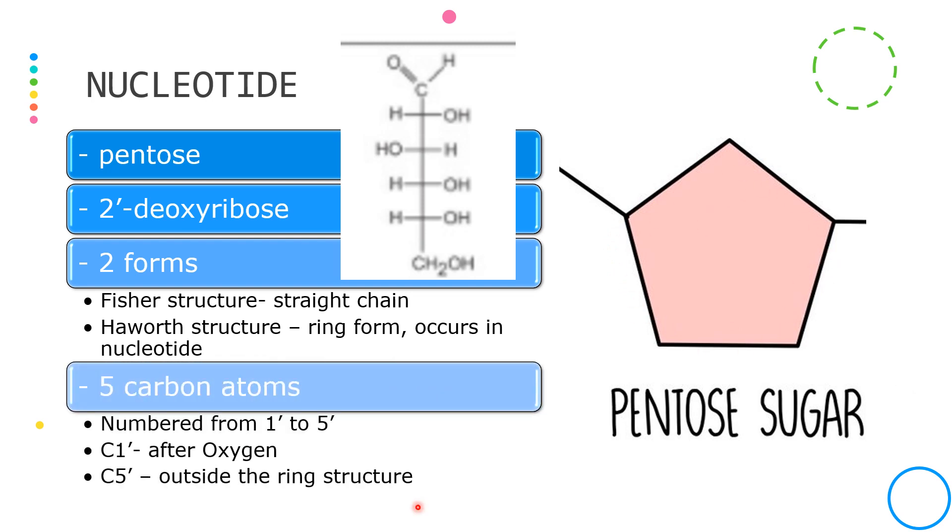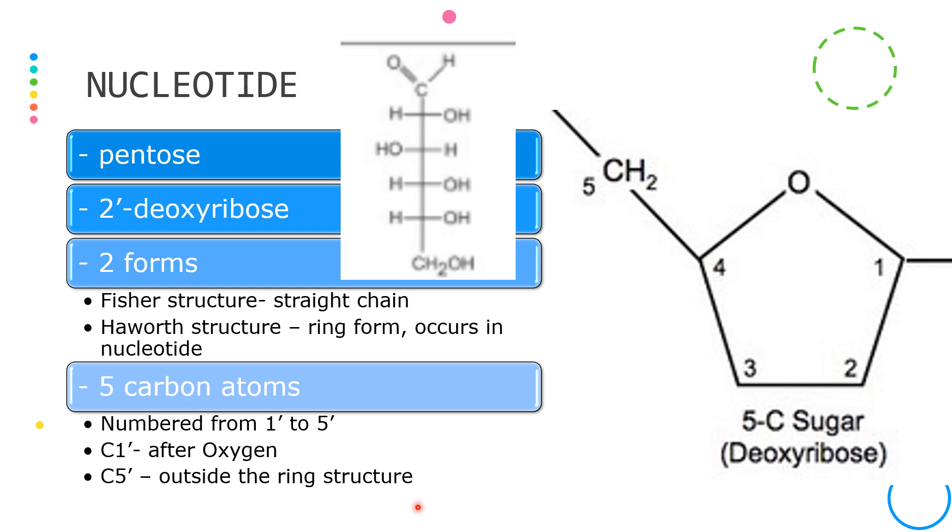A pentose sugar contains five carbon atoms. The carbon atoms are always numbered in the same way.